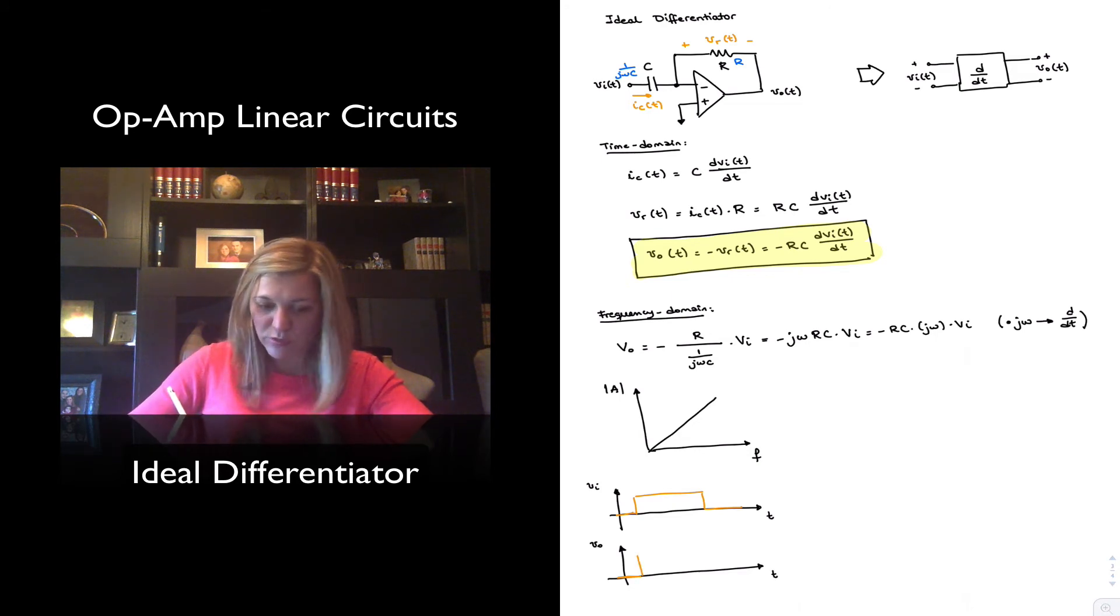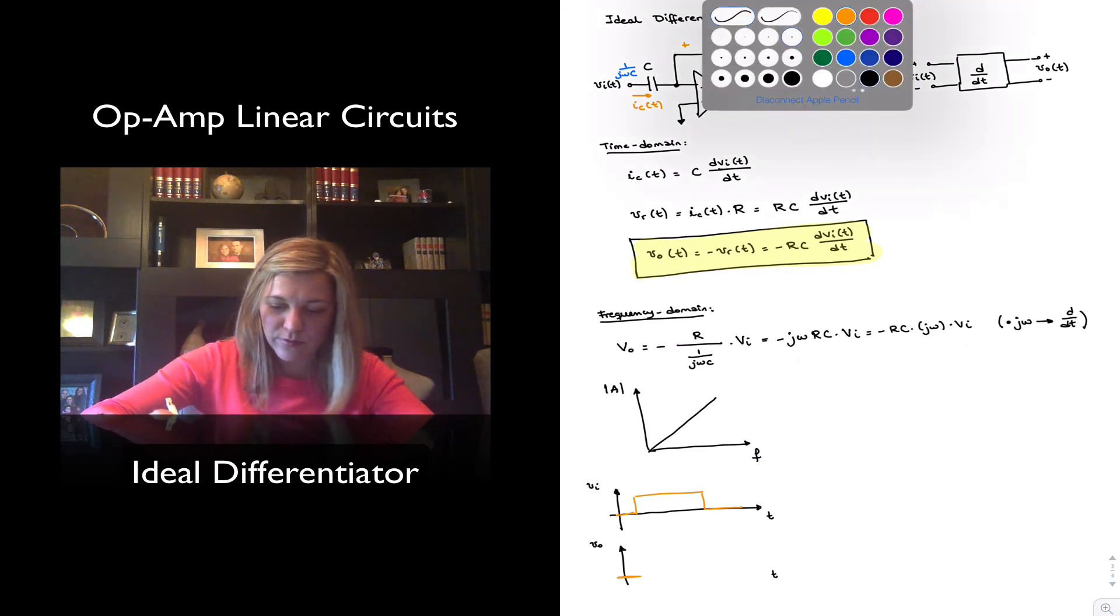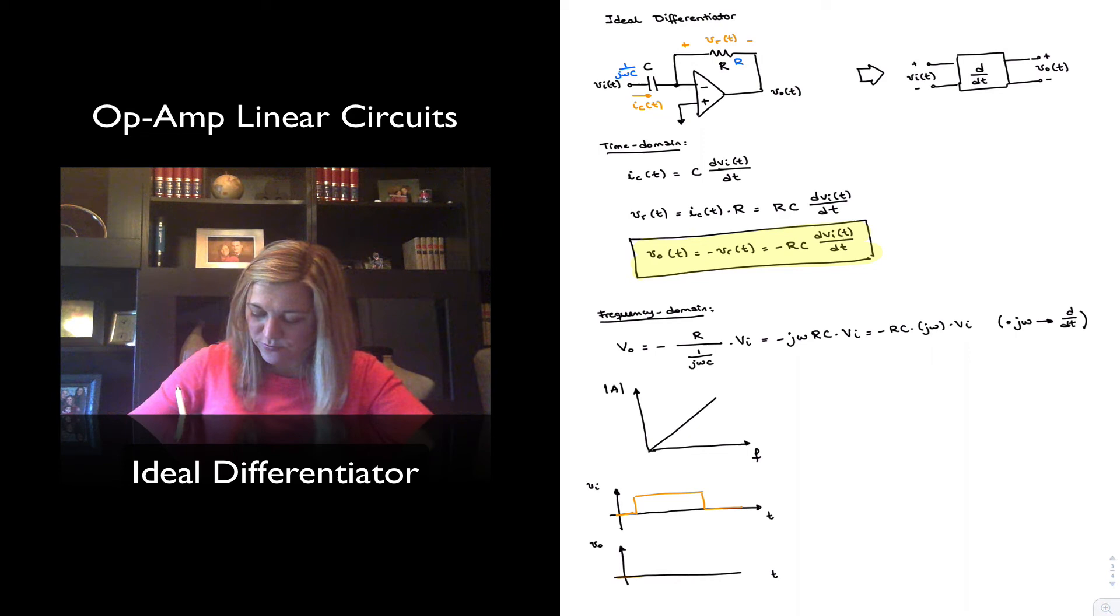So that over there, an impulse in the negative direction, or actually it could be backwards in this case because we have a negative minus RC, the proportionality constant is negative, so it will be actually an inverting type of circuit. But nonetheless, I will get the spikes whenever I have a change in my input function.